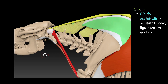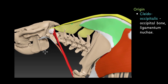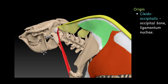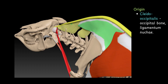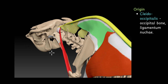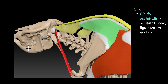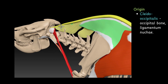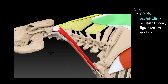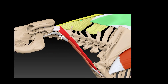So this is the ligamentum nuchae area and this is the occipital bone. The cleidooccipitalis originates from the occipital bone and ligamentum nuchae — that is why the name is cleidooccipitalis, because it originates from the occipital bone. Now for the ventral part, the cleidomastoideus: it originates from the mastoid process of the petrous part of the temporal bone. Simply remember the name for now; when you study the skull you will know about the structure.